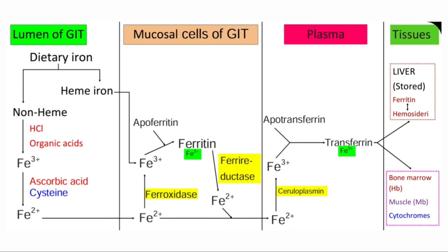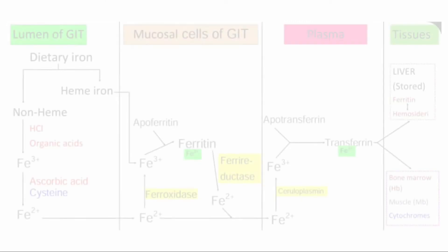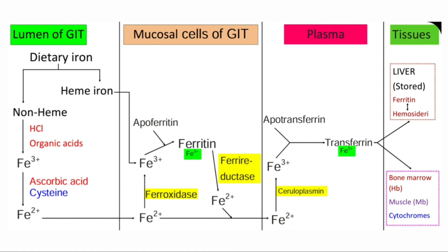The transferrin fuses with acidic endosomes inside the cells to liberate free iron. After delivering the iron to the cells, the empty apotransferrin-receptor complex returns to the cell surface. The released iron can be used for various biological activities — for example, for the synthesis of hemoglobin, myoglobin, catalase, and peroxidase, and also used in biological oxidation in the form of cytochromes.